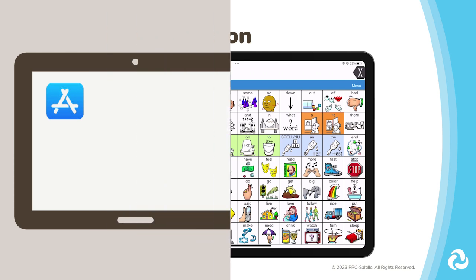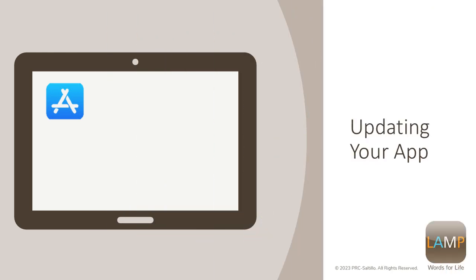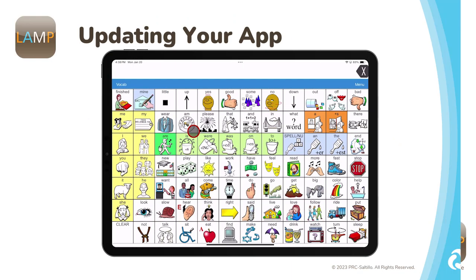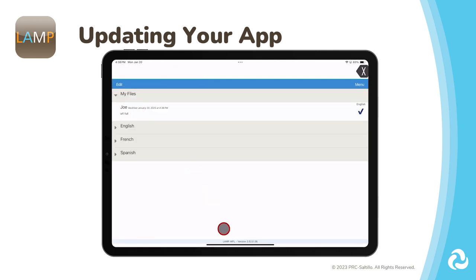My name is Joan. Keeping your LAMP Words for Life app up to date will ensure optimal performance and add new features and settings when they are released. PRC Saltillo announces new updates on the website blog, in email newsletters, and on social media platforms. To check on what version you are running, go to Vocab, then choose New Vocab. At the bottom of your screen, you will see the version of your LAMP Words for Life app.